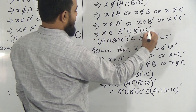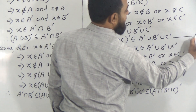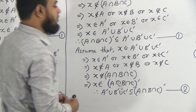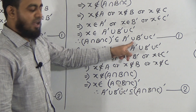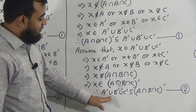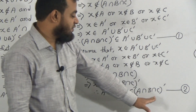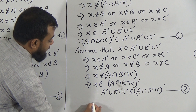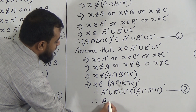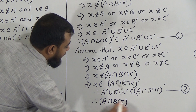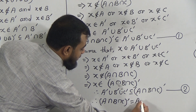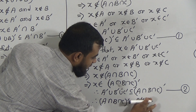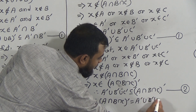From equation one and equation two, the left hand side is a subset of the right hand side, and the right hand side is a subset of the left hand side. Therefore, A intersection B intersection C whole prime is equal to A prime union B prime union C prime.